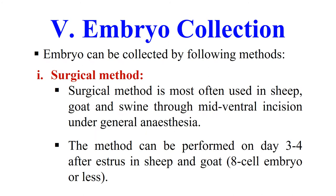Next is embryo collection. Once artificial insemination is done, the next step is to collect the embryo. Embryos can be collected by the surgical method, mostly used in sheep, goat, and swine, where they are surgically removed from the body via a mid-ventral incision under general anesthesia. This is performed on day 3 or 4 after estrus in sheep, and in goats at the 8-cell or less embryo stage.